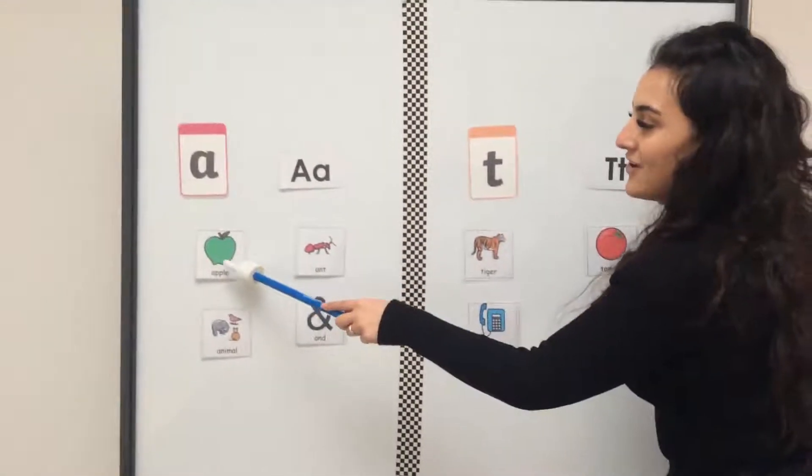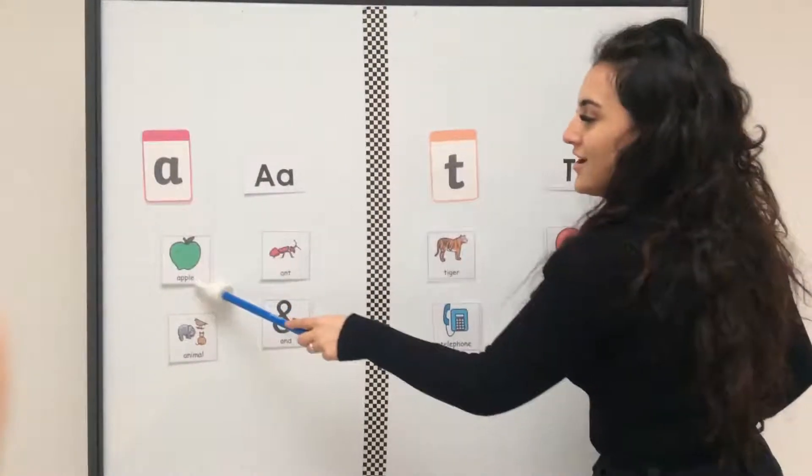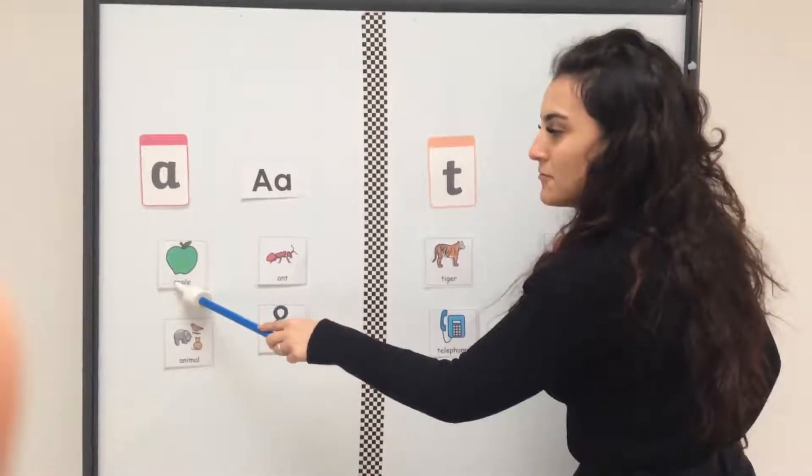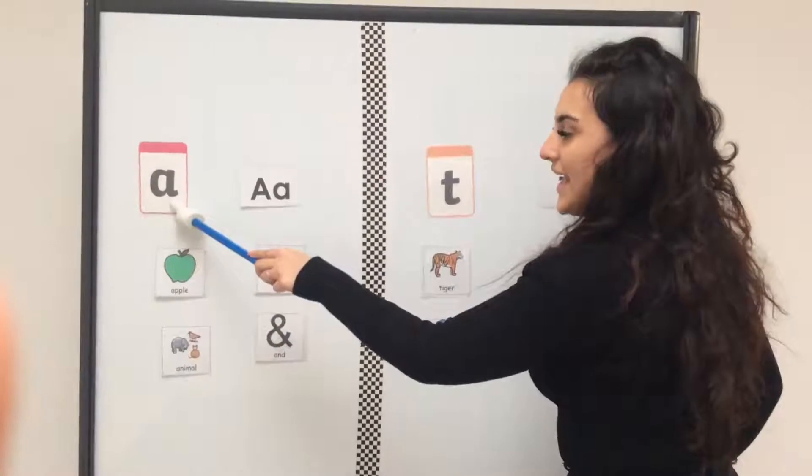We have A for apple. I've got the word and the picture for apple. Apple begins with the letter A.